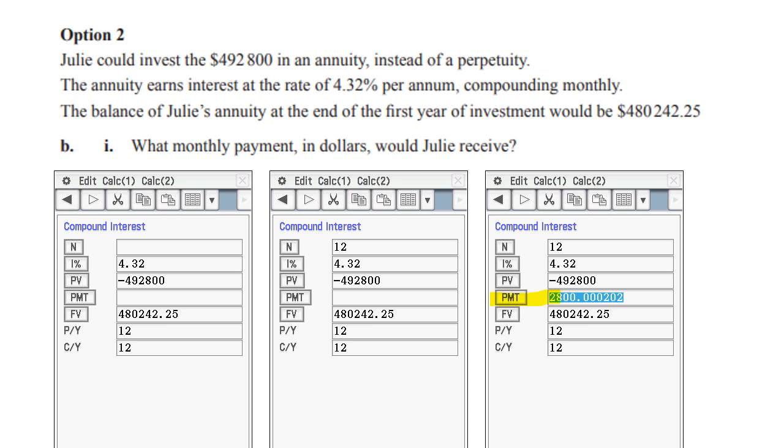And we press the PMT button and we get this lovely value which of course we write up as $2,800. Now it does say in dollars so we don't have to do the two decimal places and if we did it'd be 0.00 and don't worry about that tiny little bit at the end.